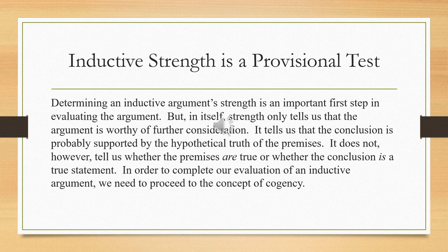It's a provisional test, meaning an argument that is strong passes the first test — the premises would support the conclusion if they were true. But this does not tell us whether or not the premises are true or whether the conclusion is true. In order to determine this, we need to apply a second test, and this is where the concept of cogency comes in. An inductive argument can be strong or weak. If it's weak, it's a bad argument. If it's strong, that doesn't mean it's necessarily good, but it has passed the first test, and we can then apply the second test — the test of cogency — which will determine if it's a good or bad inductive argument.